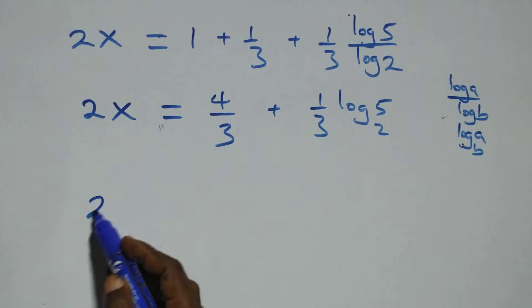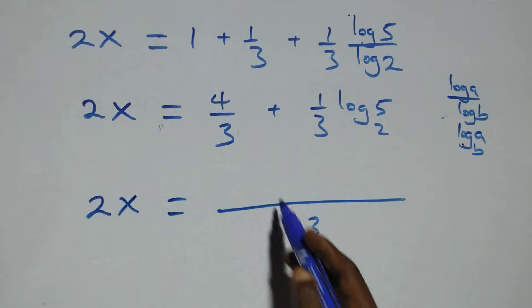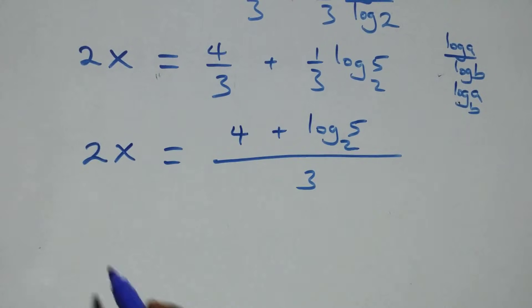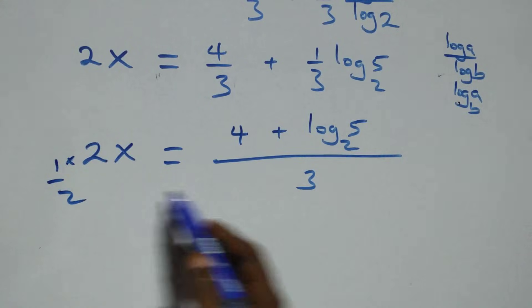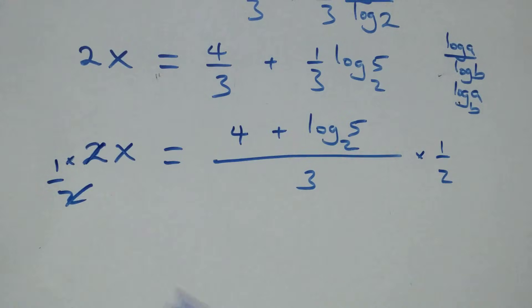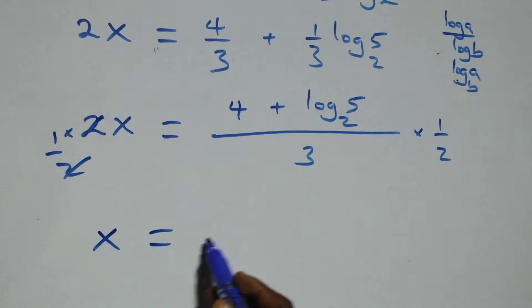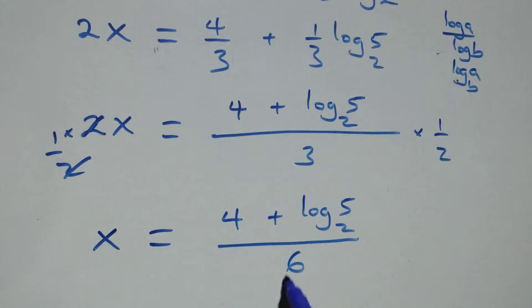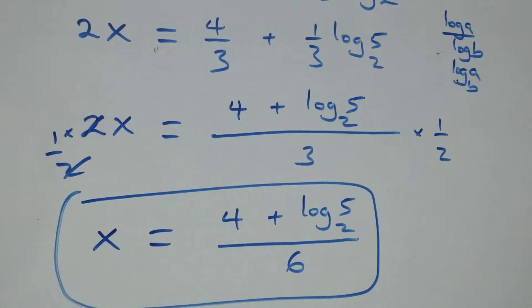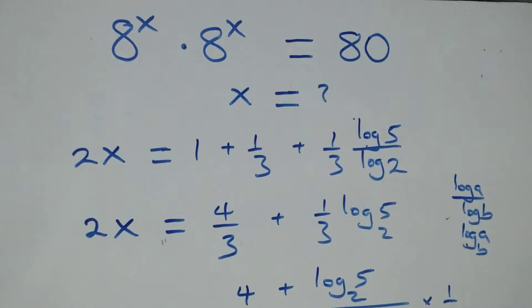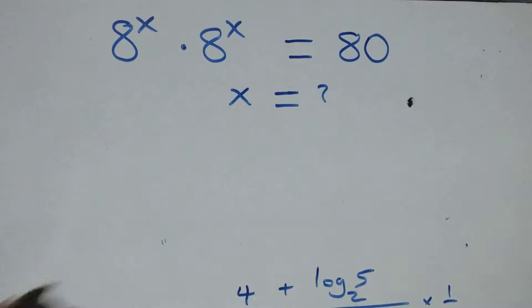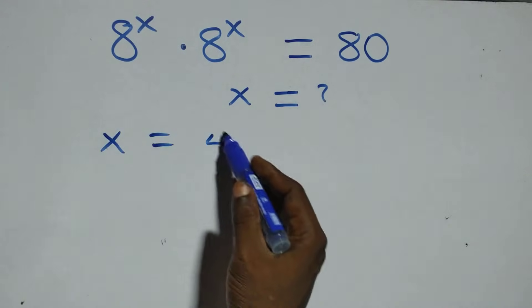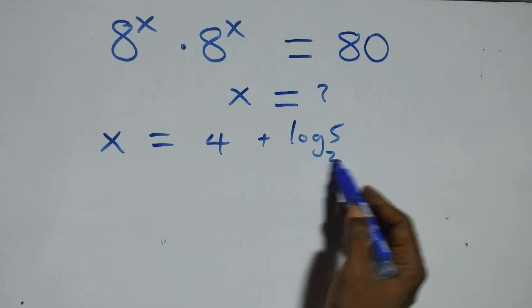Bringing this together as a fraction, we have 2x equals to 3 plus 1 equals 4, plus log 5 to base 2, all over 3. Then multiplying both sides by 1 over 2, the 2 cancels and we have x equals to 4 plus log 5 base 2, all over 6, which is the value of x. Now let's check if this satisfies the given problem by substituting the value of x, which is x equals to 4 plus log 5 base 2, all over 6.